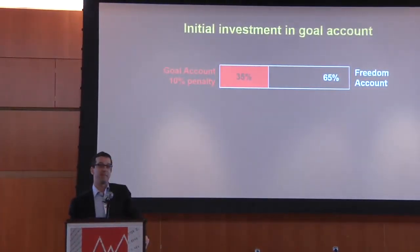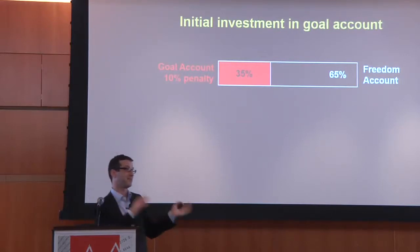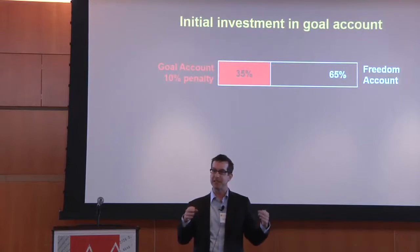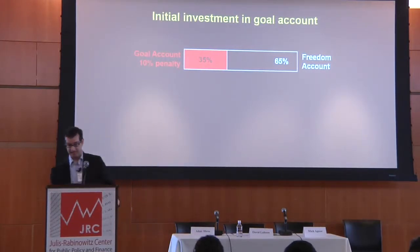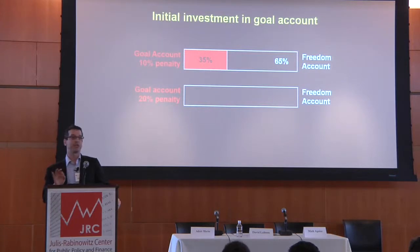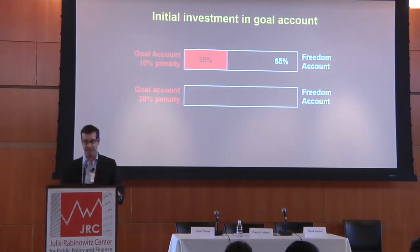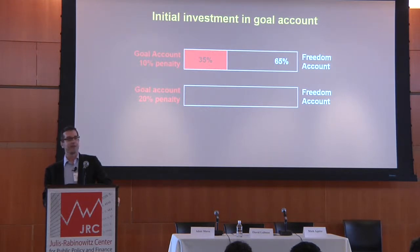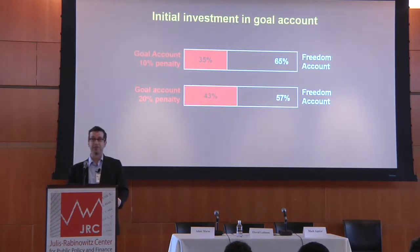About 85% of subjects put some of their money in the goal account. In terms of dollar weighting, 35% of the dollars we give subjects are allocated to the goal account. Then we do another arm with different subjects from the same population: the goal account now has a 20% penalty for early withdrawal. Does the increase in the penalty lower or increase subjects' propensity to put money in? It pulls them in — we see a 43% dollar-weighted allocation to the goal account.